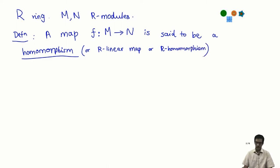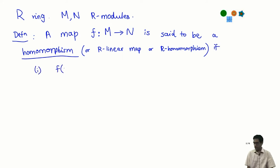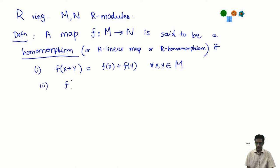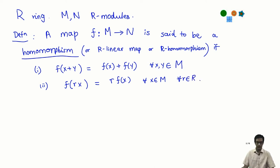There are many different words we use for this. A homomorphism of R-modules is a map satisfying two properties: first, F(X + Y) = F(X) + F(Y) for all X and Y in M; second, F(r · X) = r · F(X) for all X in M and all r in R. In other words, a module has two important operations — addition and scalar multiplication by R — and a homomorphism is a map which preserves these two operations.